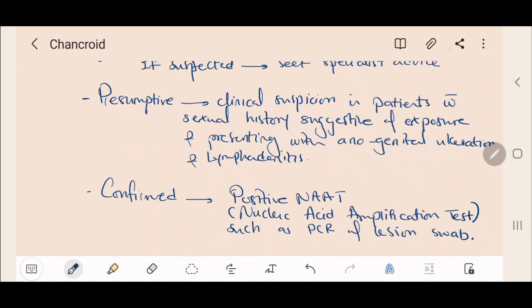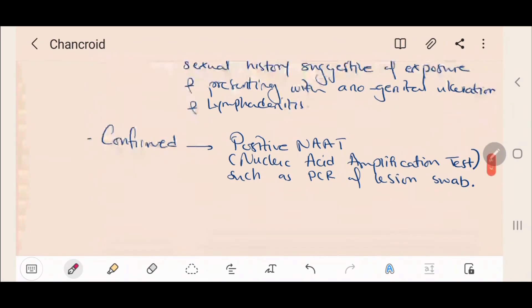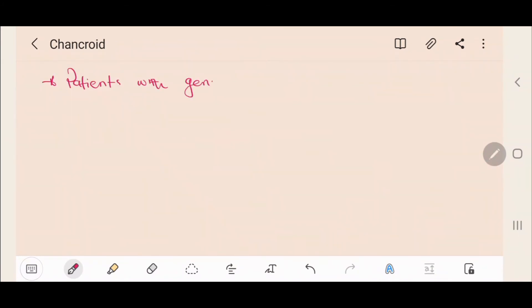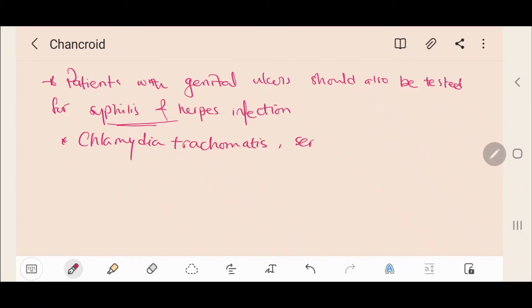Patients with genital ulcers should also be tested for syphilis and herpes infection as well as chlamydia trachomatis and donovanosis if indicated. Remember that all patients with genital ulcer disease should be offered an HIV test and referred for anogenital ulcers.